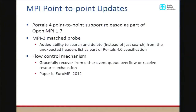Portals 4 point-to-point support is now released as part of OpenMPI, so anyone who wants to see how we implement these semantics given the building blocks can look at the code. One interesting development since last time was figuring out how to deal with MPI-3's matched probe. Traditionally, probe looks to see if a message is there without removing it. Matched probe adds an interlock between the probe and the receive, which higher-level abstraction languages like Python wanted for their MPI bindings — allowing you to send and receive a list without marshaling it all into one big contiguous buffer.